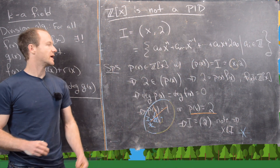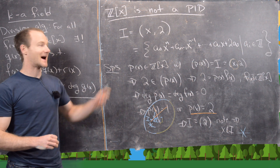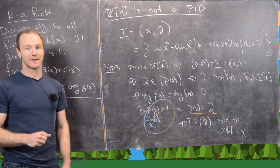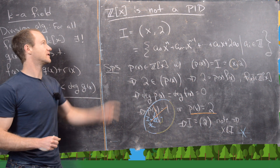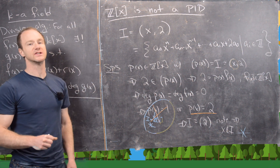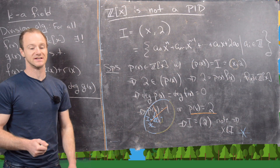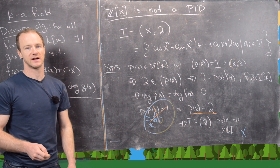In other words, this ideal is not principal. We've found an example of an ideal in Z[x] which is not a principal ideal.